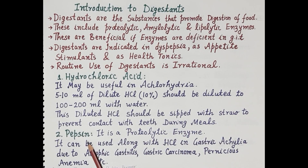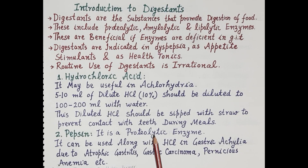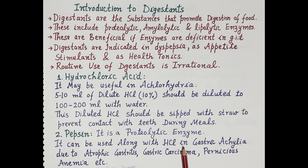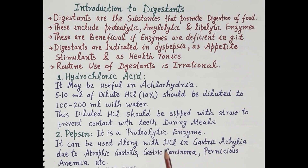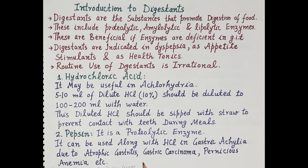The second digestant is pepsin. Pepsin is a proteolytic enzyme found in gastric juice, and it digests proteins. Pepsin formulations can be used along with hydrochloric acid in gastric achilia. Gastric achilia is the partial or complete absence of gastric juice, and it is caused due to atrophic gastritis, gastric carcinoma, or pernicious anemia.